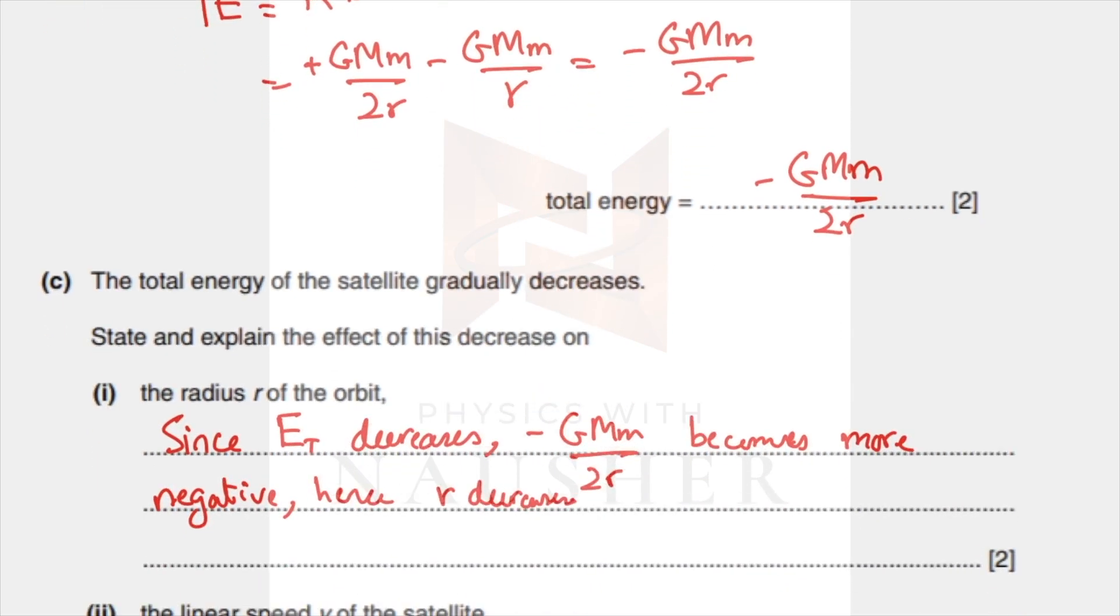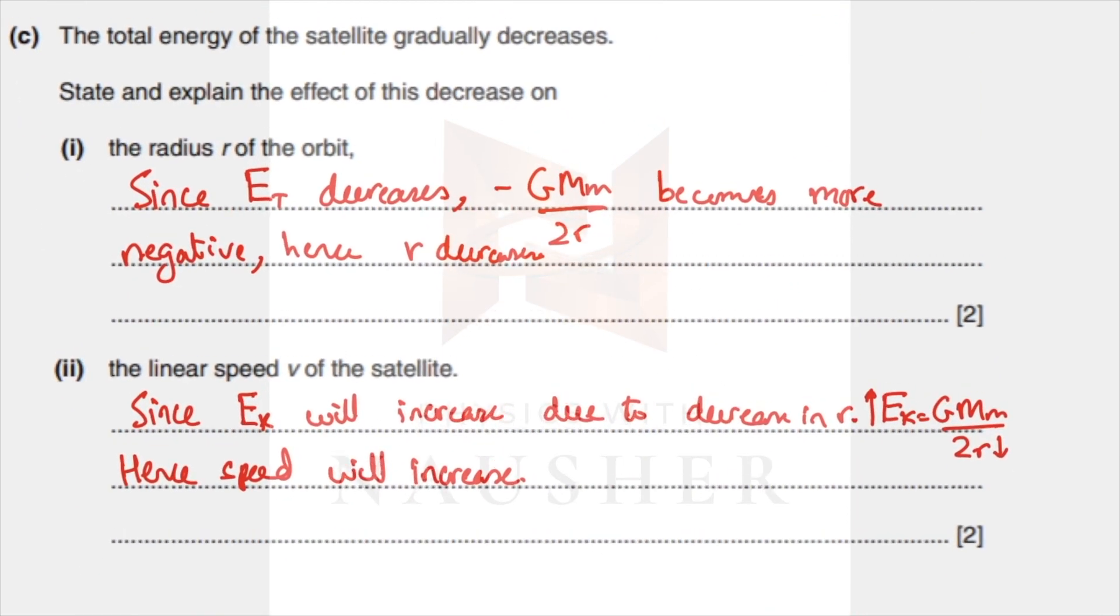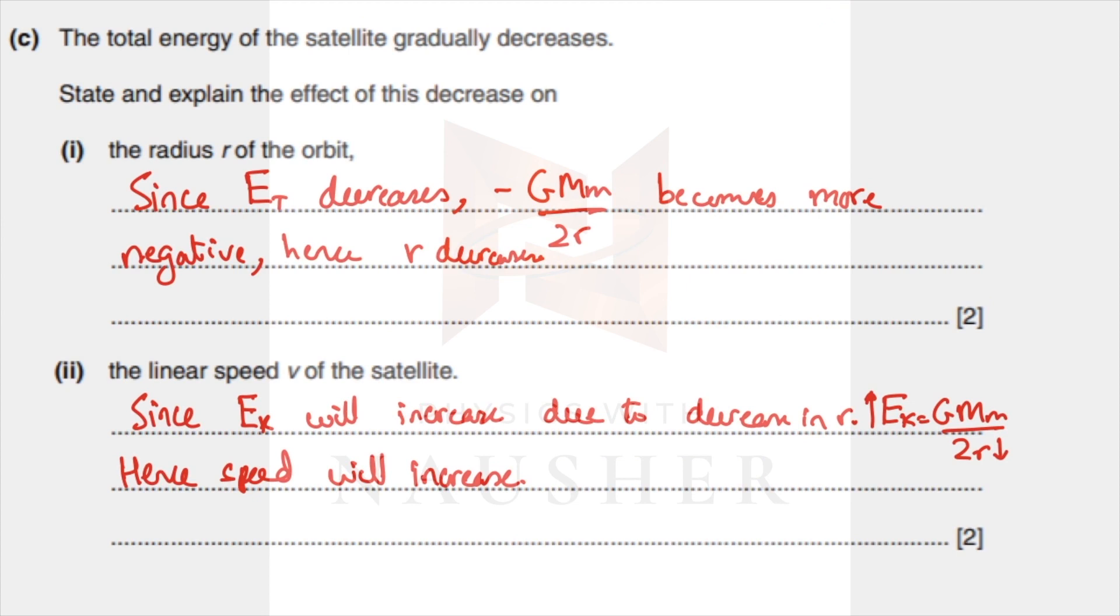In part C they say the total energy of the satellite decreases. Explain what happens to the radius of the orbit and the speed. You need to understand: let's say this is the planet and you're in orbit one versus orbit two. Orbit one has more total energy because you're at a greater height. If you lose energy, you will fall back in because the planet is pulling you inwards.